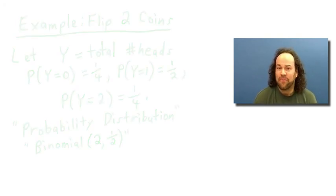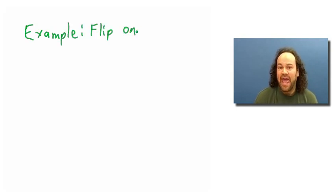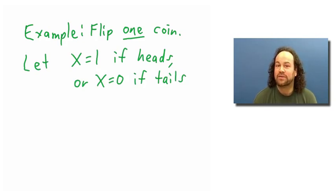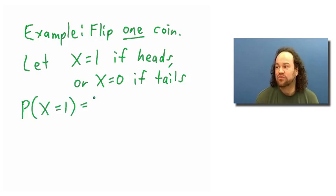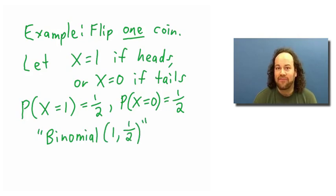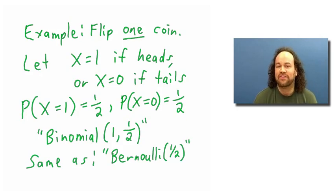For something even simpler, if we flip just one coin and let x be the number of heads — 1 if it's a head or 0 if it's a tail — then the probability that x equals 1 is a half and the probability x equals 0 is also a half. We could call this the binomial(1, 1/2), and we also call this the Bernoulli(1/2) distribution, meaning we did one experiment and the probability of success was a half.